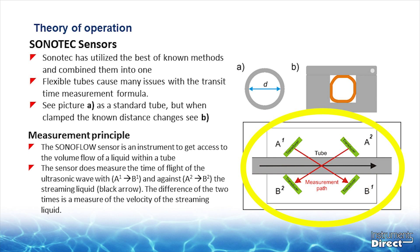At the same time, A2 sends a signal to B2. But in this case, the signal is going against the flow current and would take a longer period of time to transit the tube. The difference in transit time between the upstream and the downstream is proportional to the average flow velocity. And since we know the area of the tube now, the volumetric flow is calculated in engineering units.